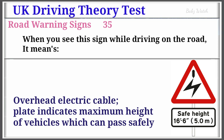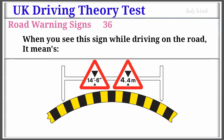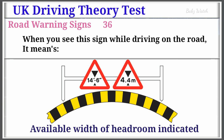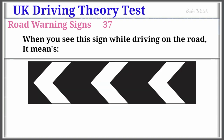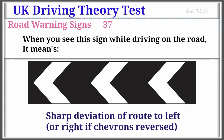UK Driving Theory Test Road Warning Sign Number 36: When you see this sign while driving on the road, it means Available Width of Headroom Indicated. Warning Sign Number 37: When you see this sign while driving on the road, it means Sharp Deviation of Route to Left (or right if chevrons reversed).